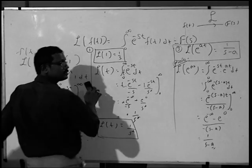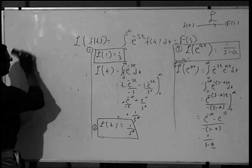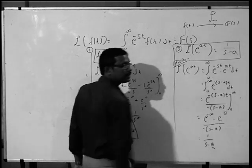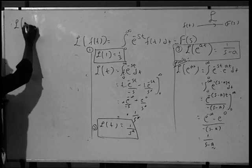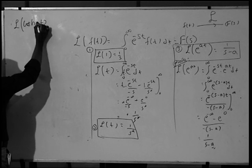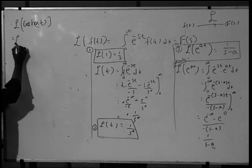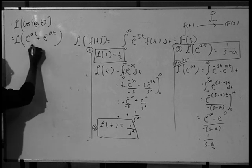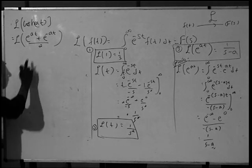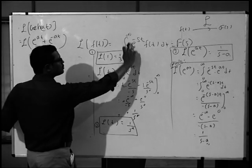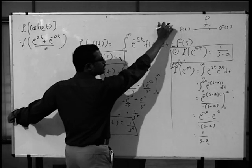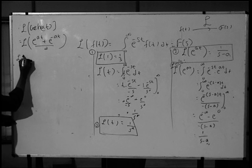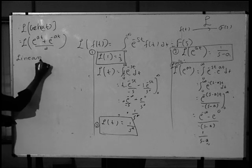We can apply that formula to find the Laplace transform of cosh(at), because cosh(at) can be written as e raised to at plus e raised to minus at, divided by 2. The Laplace transform operator is defined as an integral operation, and we know this integral operation is linear with respect to sums or differences of functions. In general, the Laplace transform operator satisfies the linearity property.